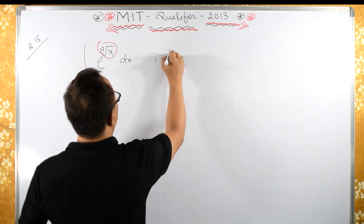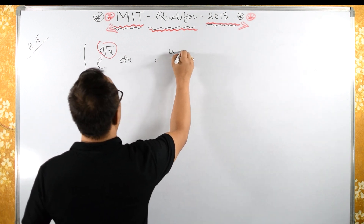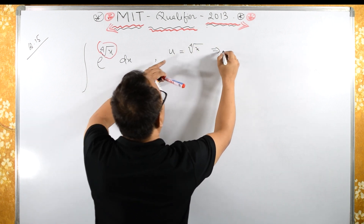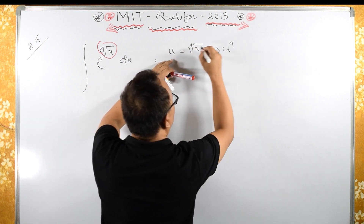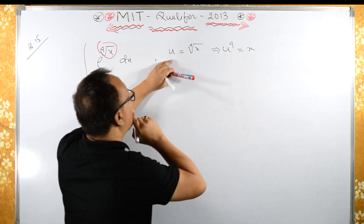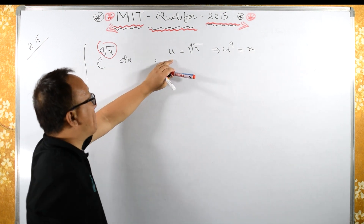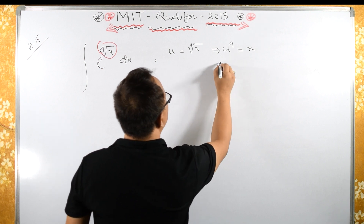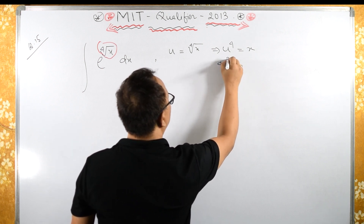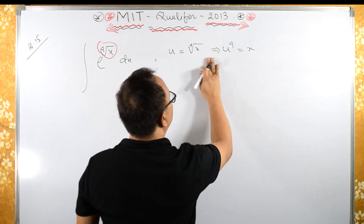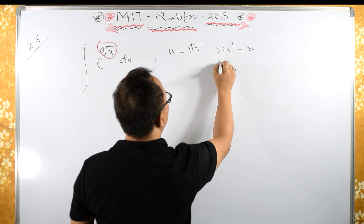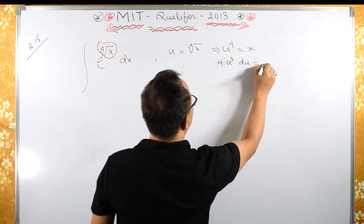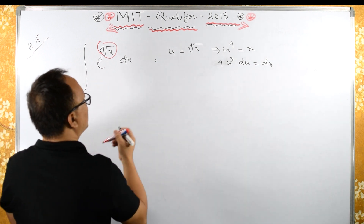Let's substitute u equals the 4th root of x, which implies u to the 4th equals x. Now differentiate this: 4u cubed du equals dx.